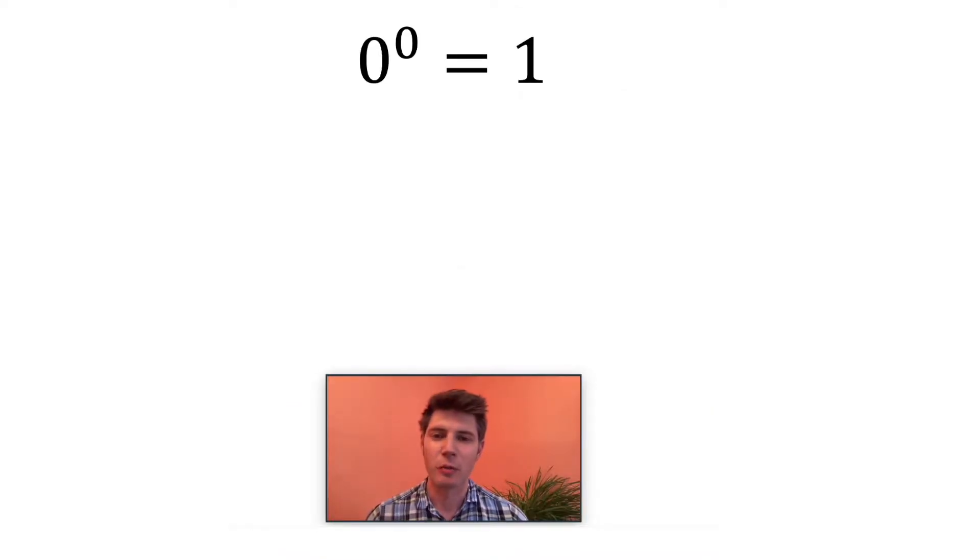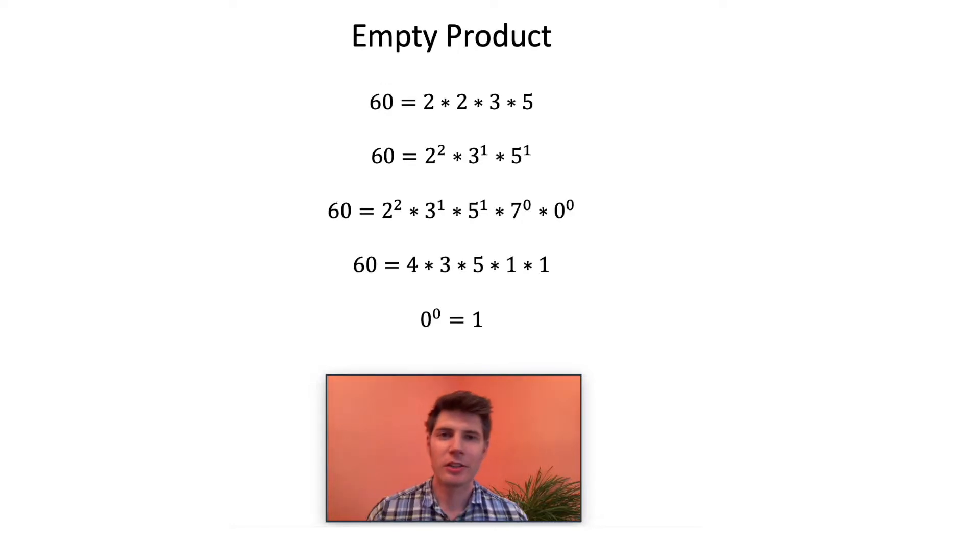First, I'll review the reason why zero to zero is one. The concept is called the empty product. So this is what I talked about in the video. How many twos do we have up here? We have two twos, so I put two to the two. How many threes do we have up here? We have one three, so I put three to the one. How many fives do we have up here? We have one five, so I put five to the one.